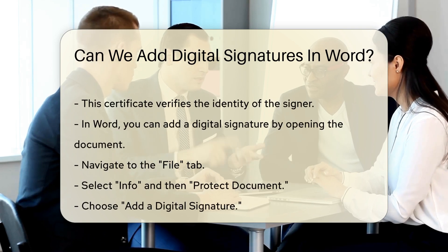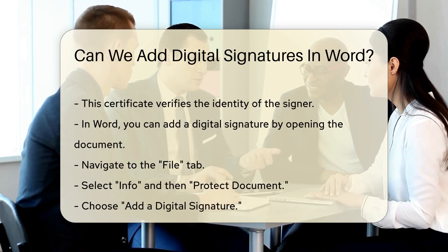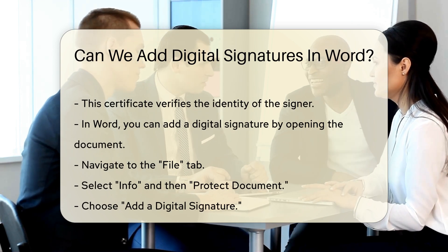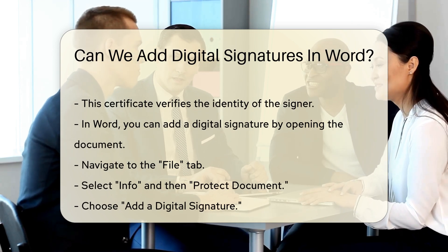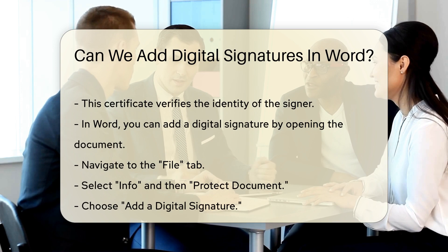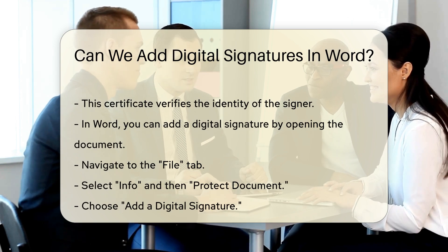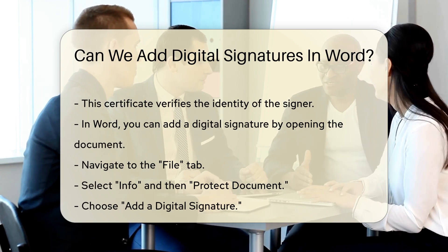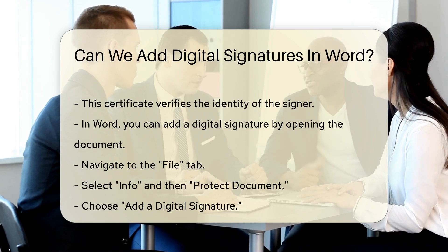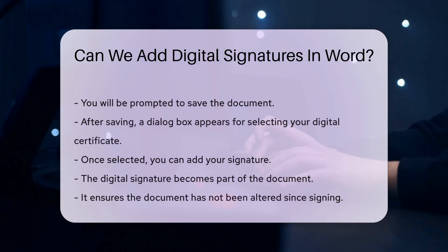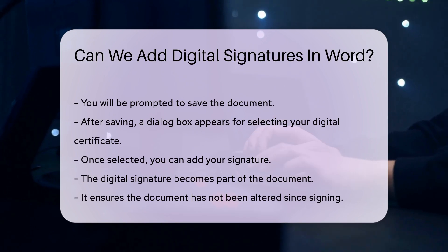In Word, you can add a digital signature by opening the document. Navigate to the File tab, select Info, and then Protect Document. Choose Add a Digital Signature, and you will be prompted to save the document. After saving, a dialog box appears. This box allows you to select your digital certificate. Once selected, you can add your signature. The digital signature is now part of the document.